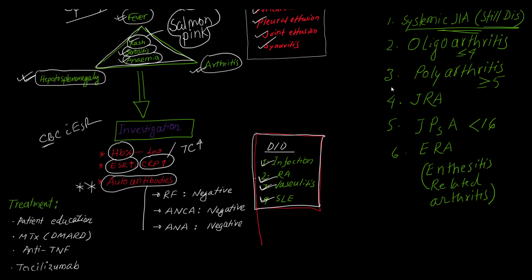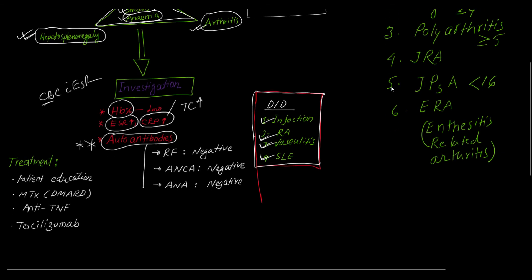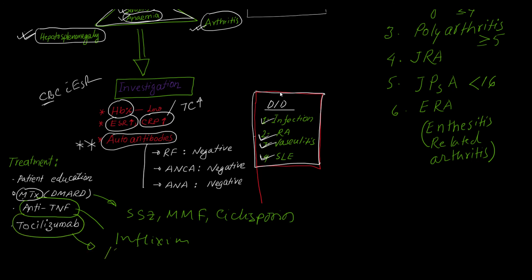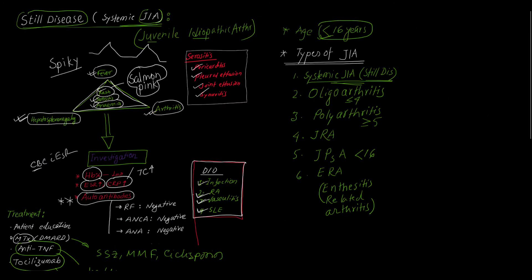How will you treat a patient with Still's disease? First, patient education — since the patient is younger, the patient's parents or attendants should be advised with appropriate clinical information. Drug treatment involves DMARDs, most commonly Methotrexate. Other DMARDs include sulfasalazine, mycophenolate mofetil, and cyclosporine. If DMARDs are not effective, anti-TNF antibody such as infliximab may be used, and sometimes tocilizumab — an interleukin-6 inhibitor — may be used.